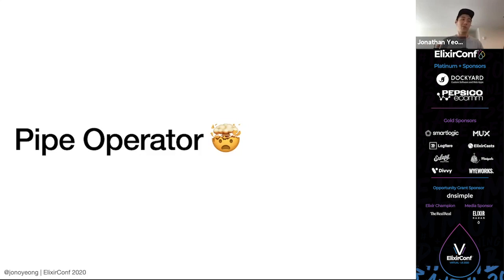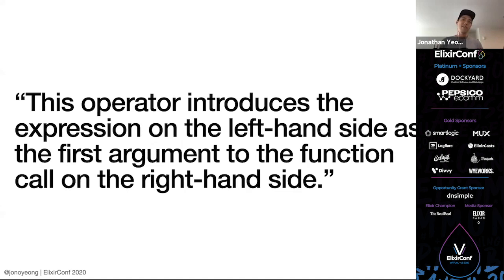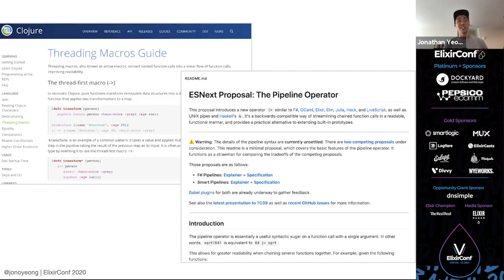I started where a lot of developers would start, and that's with documentation. The documentation is great. It states that this operator introduces the expression on the left-hand side as a first argument to the function call on the right-hand side. Maybe not news to some, but for me this made total sense. Other languages also have similar things. For example, Clojure has the threading macros, and even JavaScript is proposing to introduce the pipeline operator into its language.